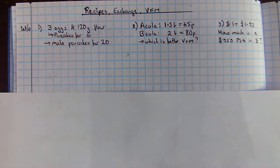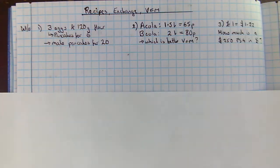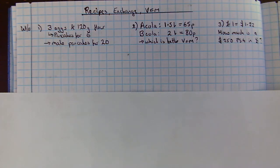One is recipes. The second is looking at value for money. And the third is when you're looking at exchange rate. All of these are essentially ratio problems. So let's look at the first example.